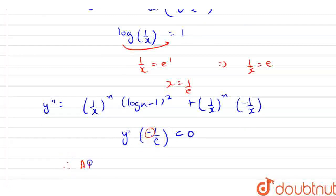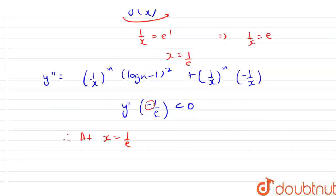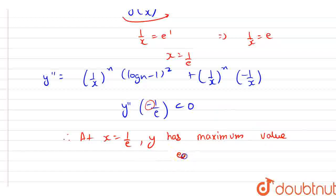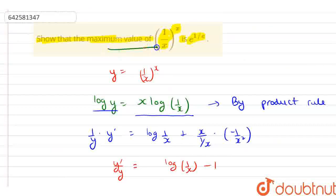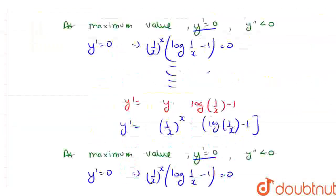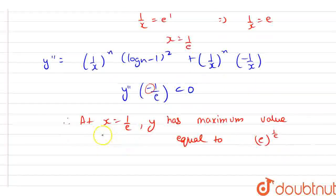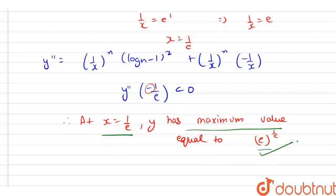So, at x = 1/e, y has a maximum value. The maximum value equals (1/e)^(1/e), which equals e^(1/e). In this question we were asked to show that the maximum value of (1/x)^x is e^(1/e), and we have shown that at x = 1/e, y has the maximum value of e^(1/e). This is our final answer. Thank you.